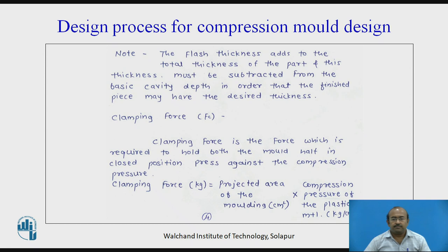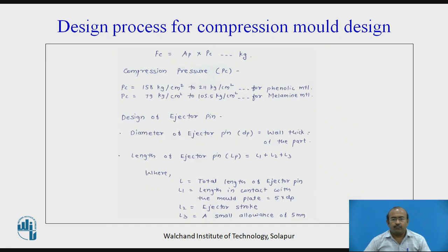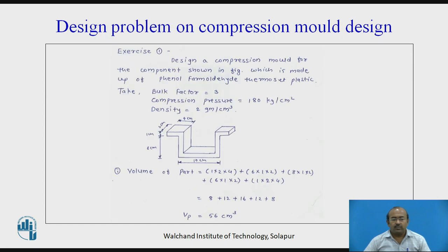Clamping force is the force required to hold both mold halves in the closed position against the compression pressure. Clamping force equals projected area of the molding multiplied by compression force of the plastic material. Compression pressure values for phenolic and melamine are mentioned. Design of ejector pin — diameter of the ejector pin is equal to the wall thickness of the part. Length of the ejector pin is the addition of various lengths: length in contact with the mold plane, ejector stroke, and a small allowance of 1 to 1.5 mm. Let us now go with one exercise numerical for compression mold design.